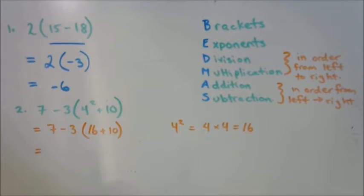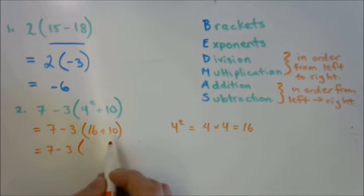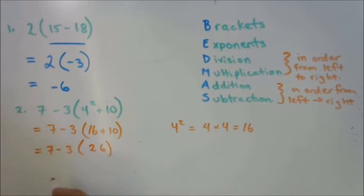Now, what are we working on next? What's our next part here? Brackets. So I'm going to rewrite everything again outside the bracket. Inside the bracket, what do we have? 26. Lovely.